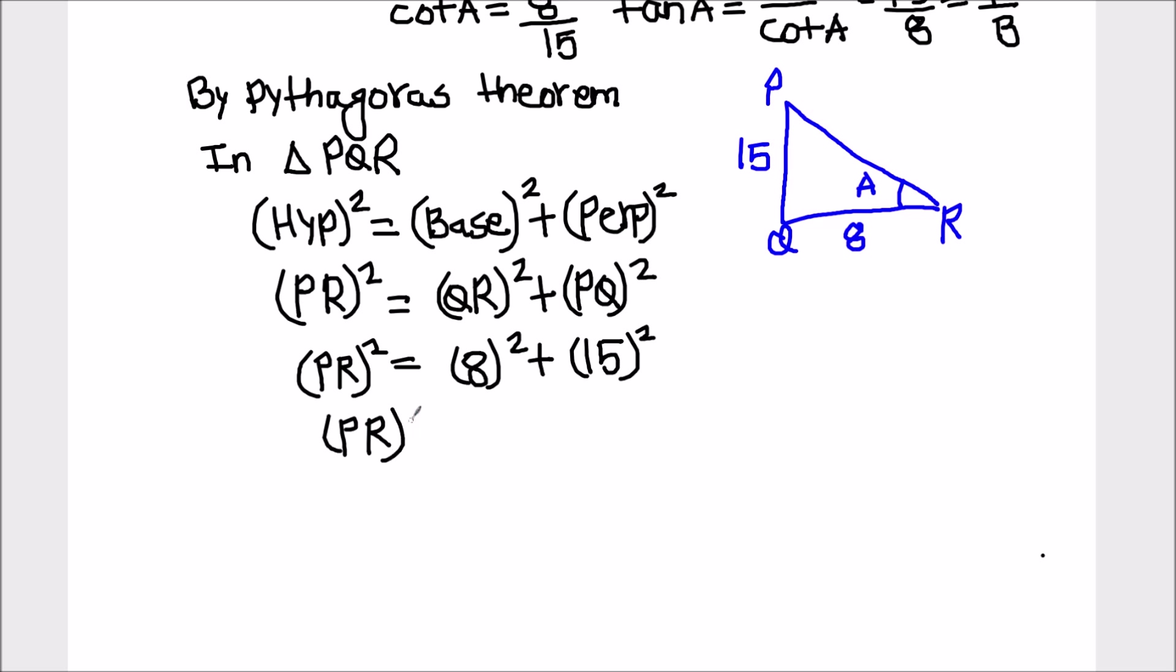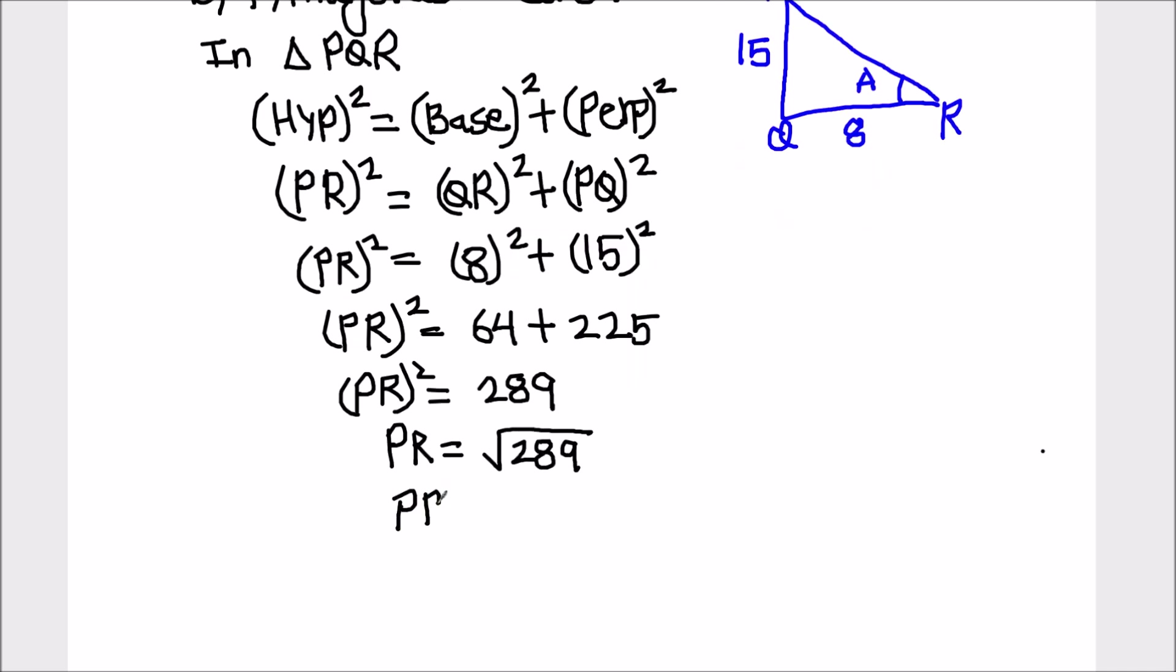PR squared equals 64 plus 225. When we add the two, we will get 289. So PR squared equals 289, or PR equals square root of 289, which is 17.